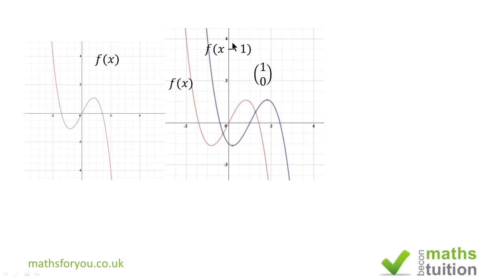If that had been x plus 1, we would have to move the graph one unit to the left hand side. Well this is x minus 1 so it's one unit to the right hand side.